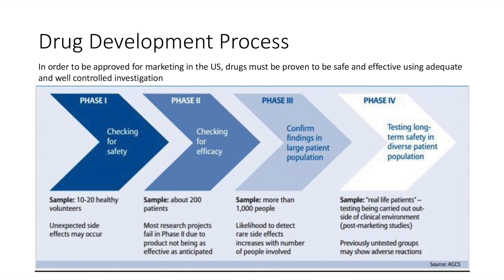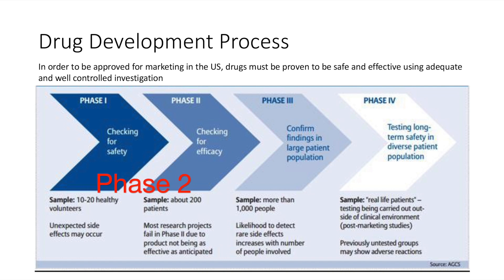Once the drug is determined to be safe, it goes through three clinical research phases. The first phase's purpose is to determine the drug's safety and dosage, and it includes about 20 healthy volunteers. The second phase is done to test the drug's effectiveness and side effects, includes about 200 patients, and takes about five years to complete.